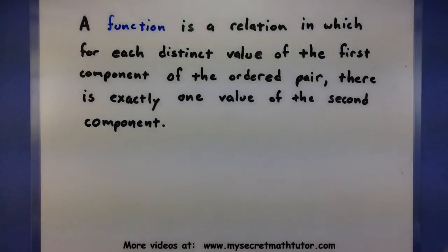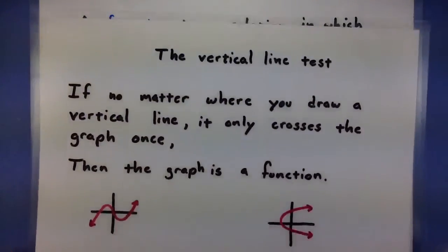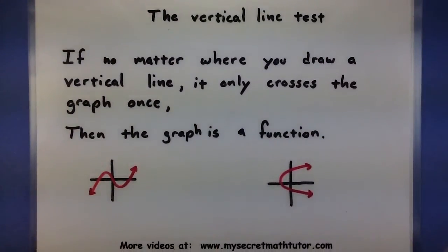Fortunately, there can be some quicker ways to test if you have a function. One of those quicker ways is if you have the graph of a relation. If you have a graph of a relation, you can apply what is known as the vertical line test. And here's what that test says.